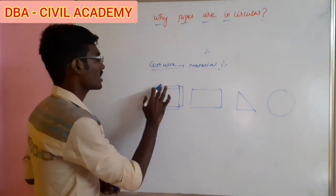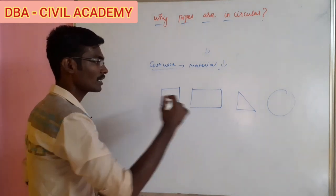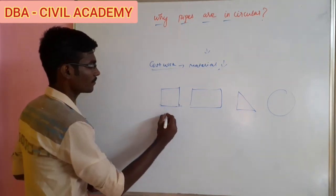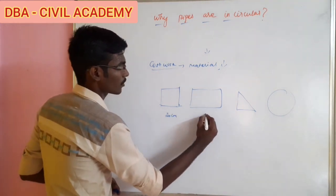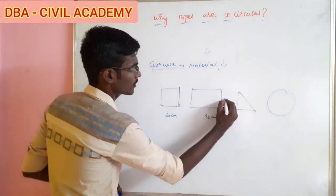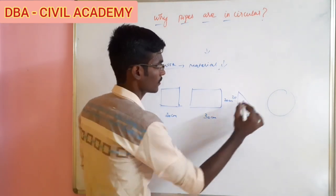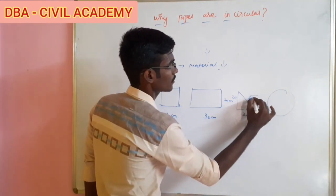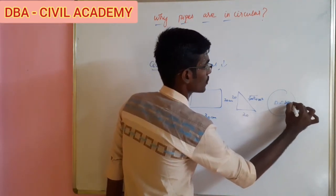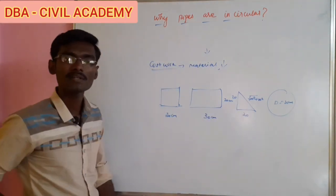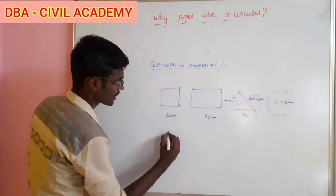If you have 4 shapes, we can see how the perimeter is a major factor. First, we assume a square with side 20cm. For the square, the perimeter is 4 times 20, which is 80cm.